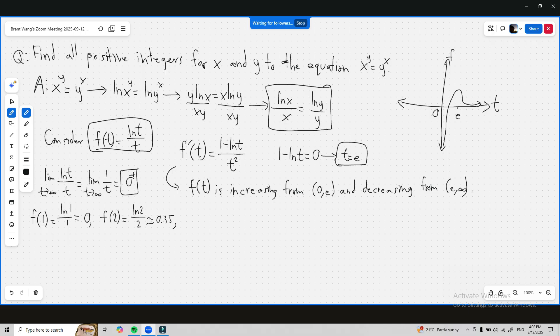f of 3 is equal to ln 3 over 3, and it's approximately 0.37, which is the peak value, the max value f can be.